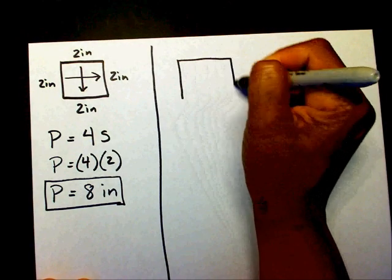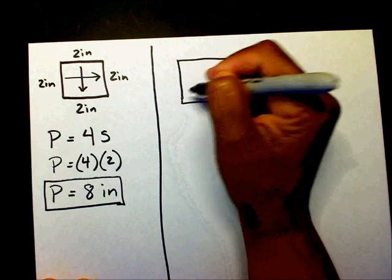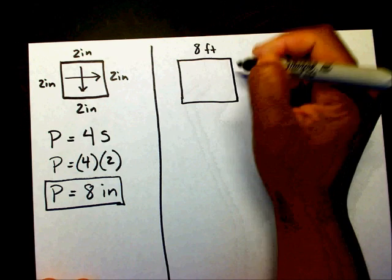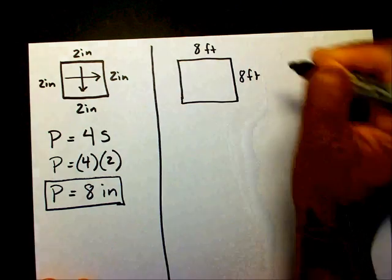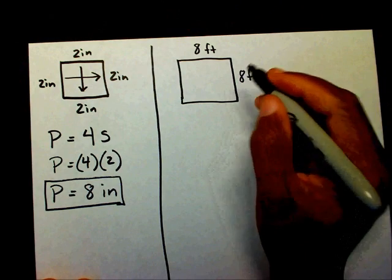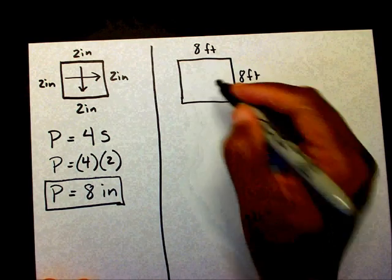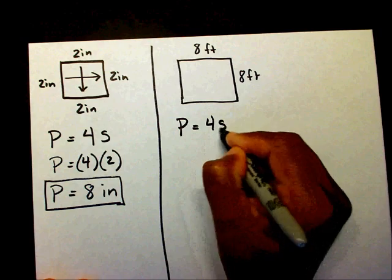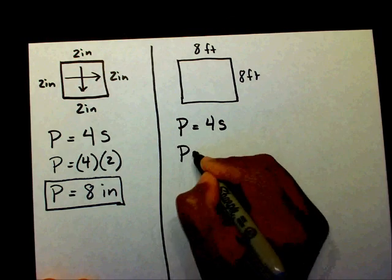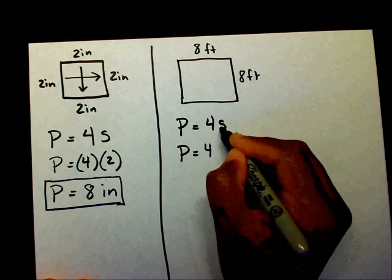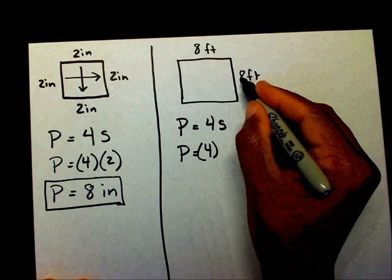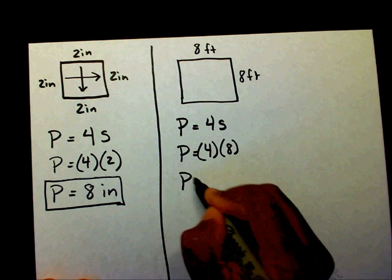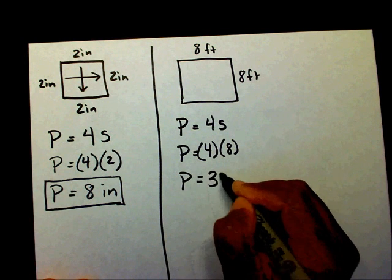Let's draw another one. This side is eight feet and this side is eight feet. I need to find the perimeter of this square. So p equals four times s — I substitute eight for s — so p equals four times eight, which is thirty-two feet.